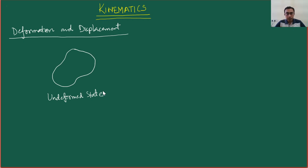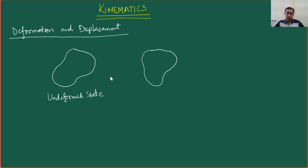Under some loading — which we do not care about within the scope of this chapter — this three-dimensional body will undergo some deformation and will end up in this final or current configuration. Please note that there is no restriction as to whether the volume will be preserved or any such notion. It is completely general: the volume can change, the shape can change, it can move from one place to another. So there is no restriction at all. This will be our current state.